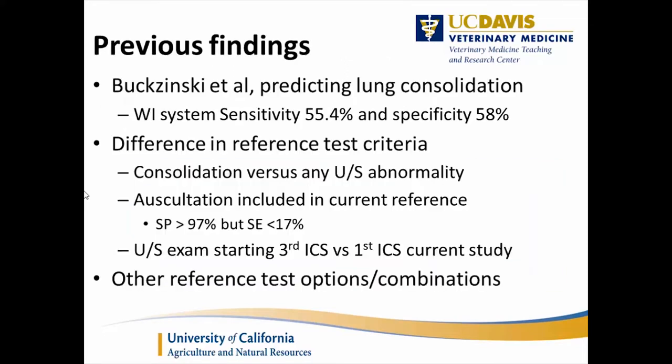Compared to previous findings — Bogzinski et al. — they predicted using lung consolidation as the reference, which is a different standard than what we used. The Wisconsin system in that study had a sensitivity of 55.4% and a specificity of 58%. The difference between their estimates and ours, which are considerably higher, reflects the difference in using consolidation only versus auscultation or ultrasound, as well as differences in ultrasound technique. We examined from the first intercostal space all the way through, similar to Dr. Ollivett's approach.